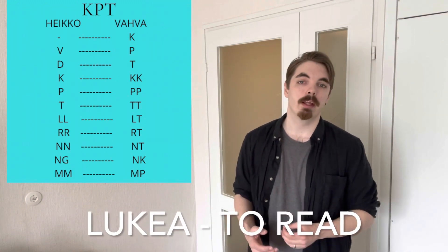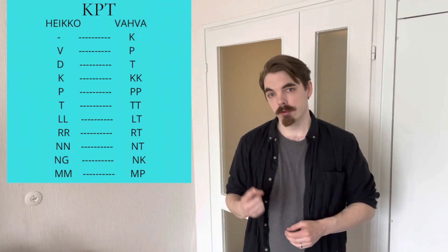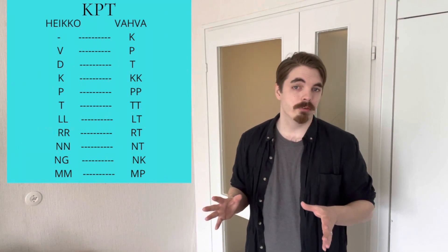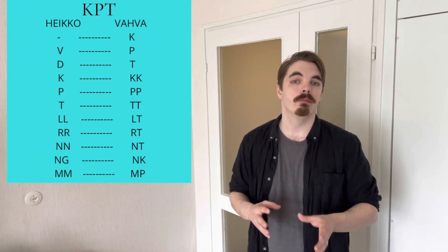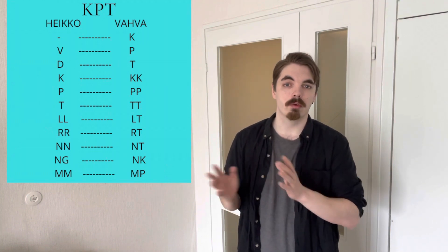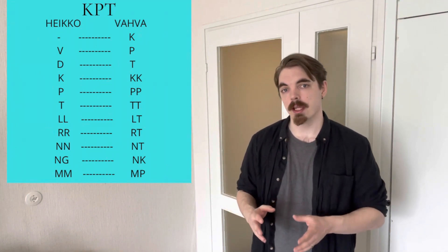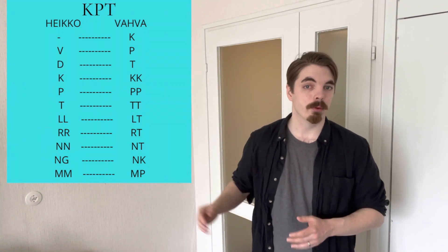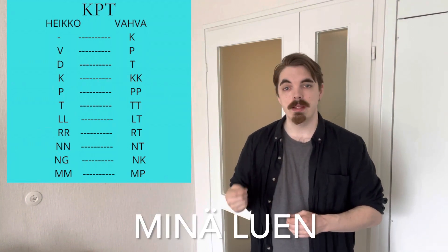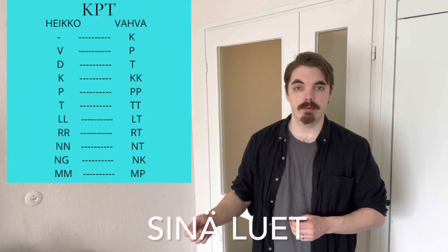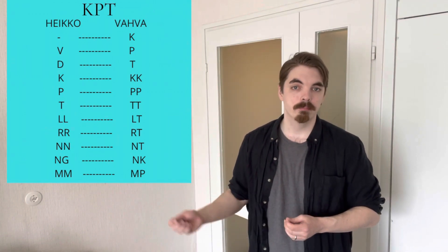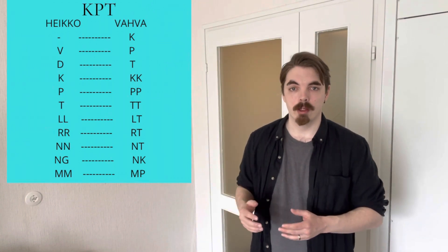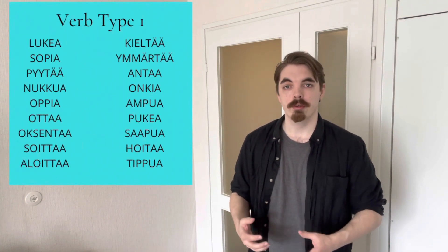For LUKEA, we have one K. You'll notice there's one K on both sides of the consonant gradation table, but since the rule for type 1 is to change strong to weak, we look for that K on the strong side — and next to it there's nothing. So we take that K out and get MINÄ LUEN, SINÄ LUET, HAN LUKEE. HAN and HE remain strong. Here are some type 1 verbs to practice with.